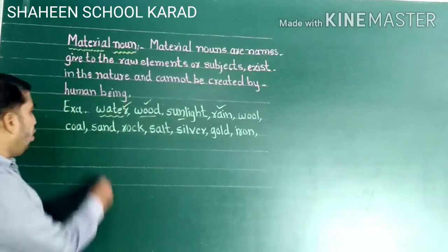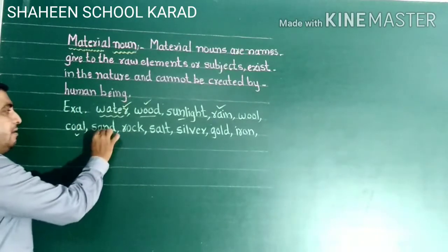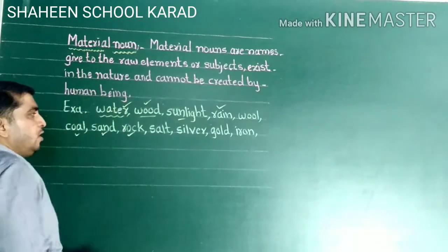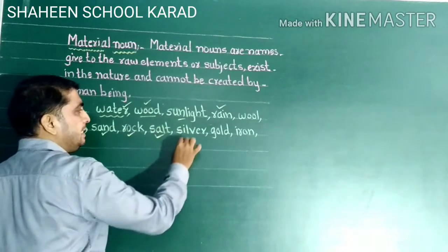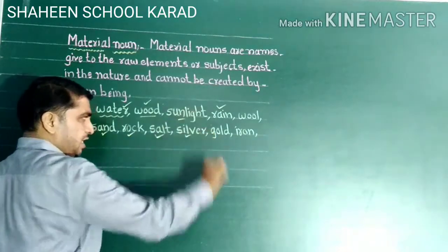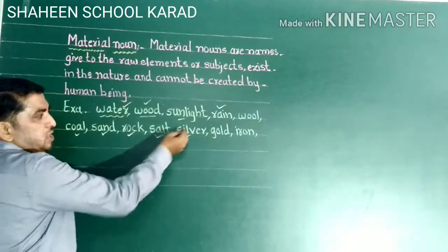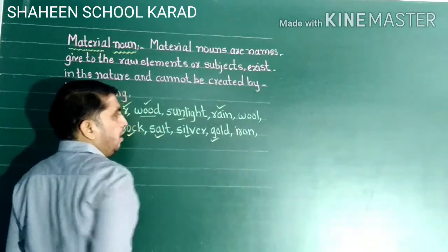More examples of material nouns include: coal, sand, rock, salt, silver, gold, and iron. All of these are natural elements and are therefore called material nouns.